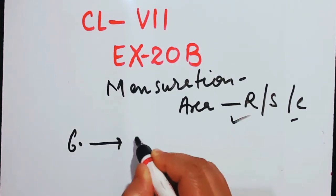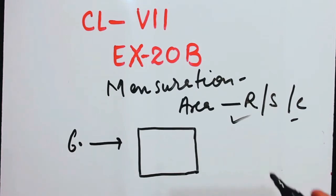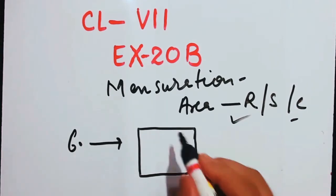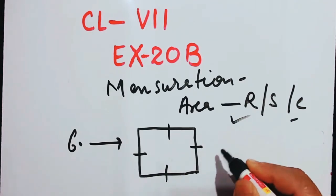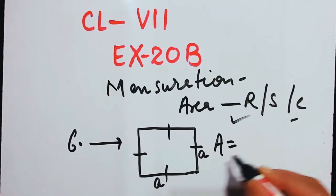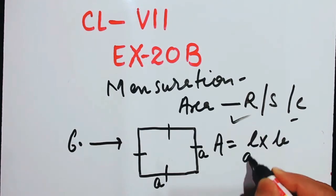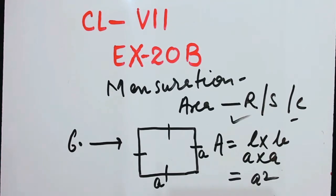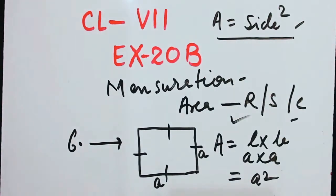Number six is talking about the area of a square. A square is a rectangle whose all sides are equal — a square is a rectangle, but not every rectangle is a square. The formula: area equals length into breadth, and since side equals a, we get area equals a into a, that is a squared. Area of a square equals side multiplied by side.